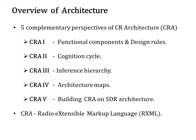There are five complementary perspectives for a cognitive radio architecture. The first perspective defines the functional components and design rules of a cognitive radio. The second defines the cognition cycle, showing the core capabilities. The third defines the inference hierarchy, examining related levels of abstraction. The fourth defines architecture maps, showing the mathematical structure. The fifth defines how a cognitive radio can be built on an SDR, showing the evolutionary path from software radio architecture to cognitive radio architecture.